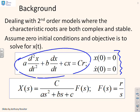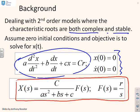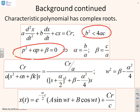We're saying that the system is underdamped, so the characteristic roots will be complex but stable. You can also do a Laplace transform representation of this system. We're assuming complex roots, so b² is less than 4ac. Let's write down the characteristic equation: p² + αp + β = 0, where α = b/a and β = c/a.